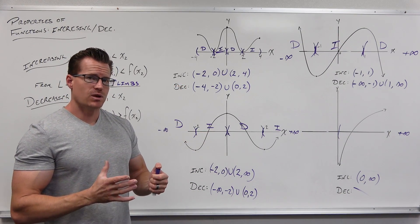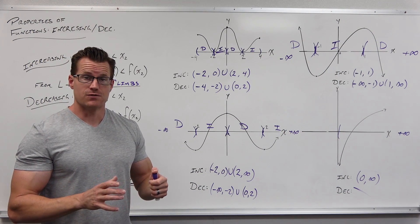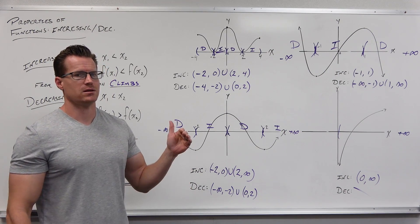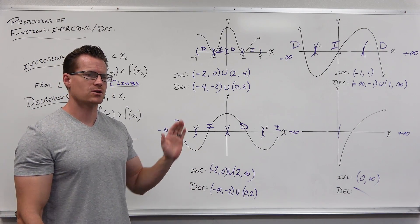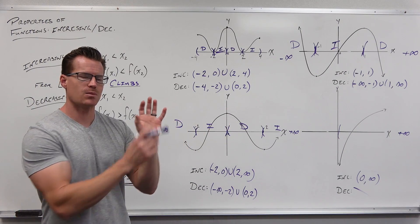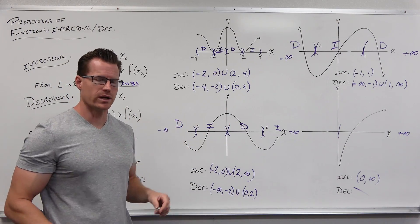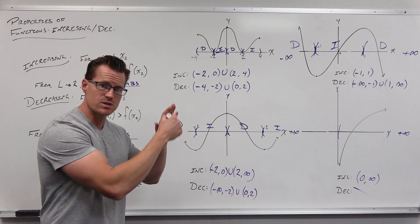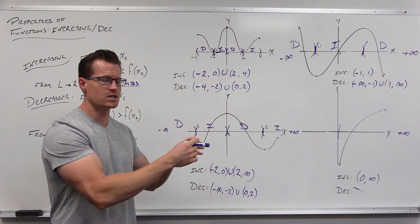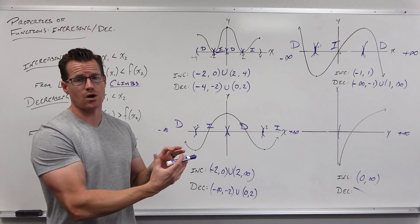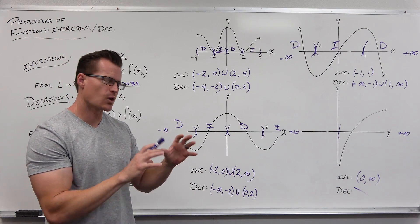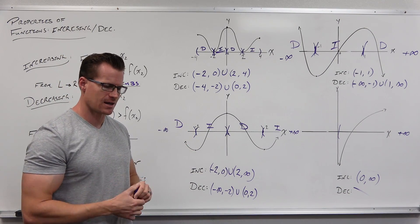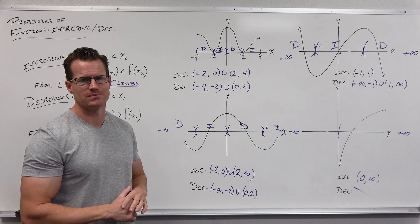That's going to be where we stop on this video. In the next video, I'm going to talk about how where we change from increasing to decreasing, in a neighborhood around that point, we will have a peak. And in the neighborhood around where we change from decreasing to increasing, we'll have a little trough. Those are going to be local or relative maximum, and we'll talk about that and absolute maximum in the next video.